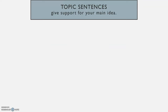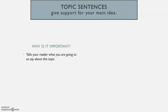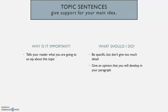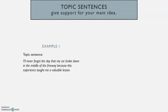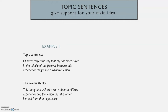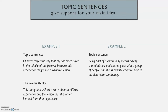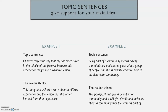The next thing your topic sentence needs to do is give support for your main idea. You need to tell the reader what you're going to say about this topic — not just what the topic is, but what are you going to say about it? Be specific, but don't give away too much detail; that's what the supporting sentences are for. You can give an opinion that you will develop in your paragraph. Here's an example: "I'll never forget the day that my car broke down in the middle of the freeway because this experience taught me a valuable lesson." The reader thinks this paragraph will tell a story about this difficult experience and connect it with a lesson the writer learned. Here's another example: "Being part of a community means having shared history and shared goals with a group of people, and this is exactly what I have in my classroom community." The reader will think this paragraph will give more definition about a community and provide details and incidents about a community the writer is part of.